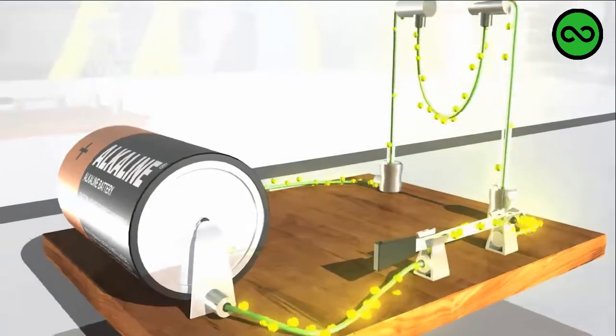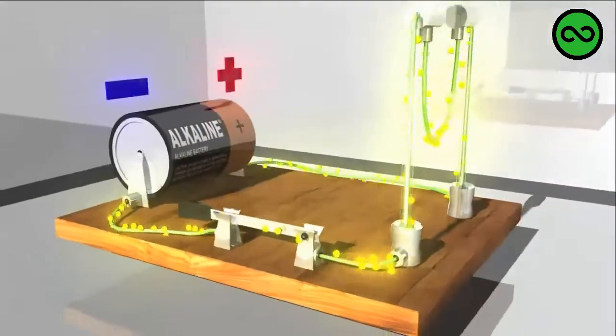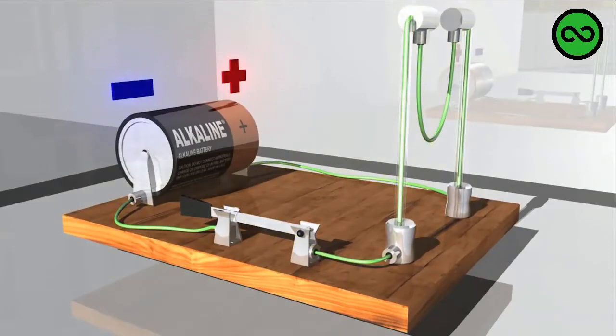Shown here as yellow particles, electrons move from negative to positive. However, the convention is to think of electrical current as moving from positive to negative. So that's how we'll show it here using red particles.